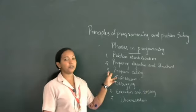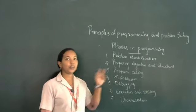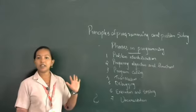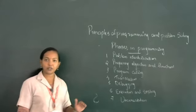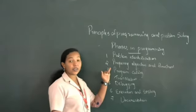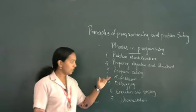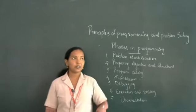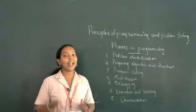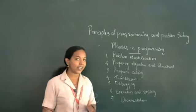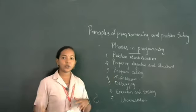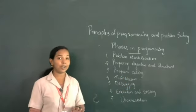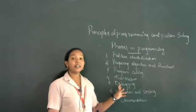The third step is program coding. From this step onwards we begin program creation. If you draw the algorithm and flowchart neatly, you can easily convert them into program statements. Once the program is created, it requires a language processor — the program is in high-level language format, so we need a translator to convert it into machine-level language. We can use an interpreter or a compiler.